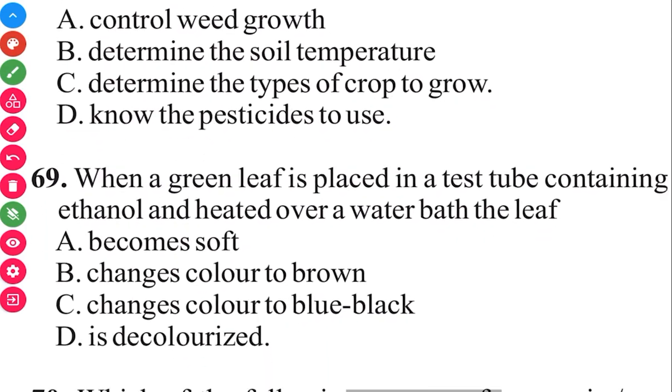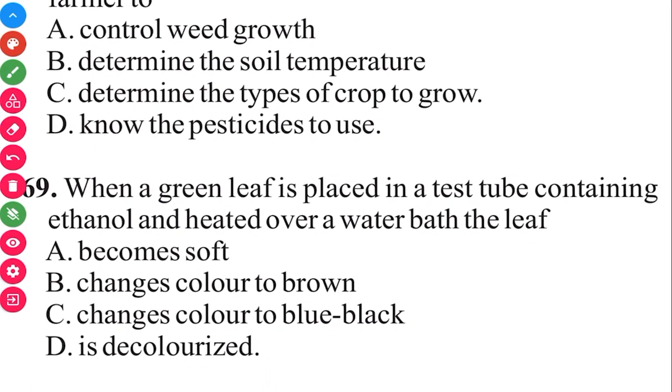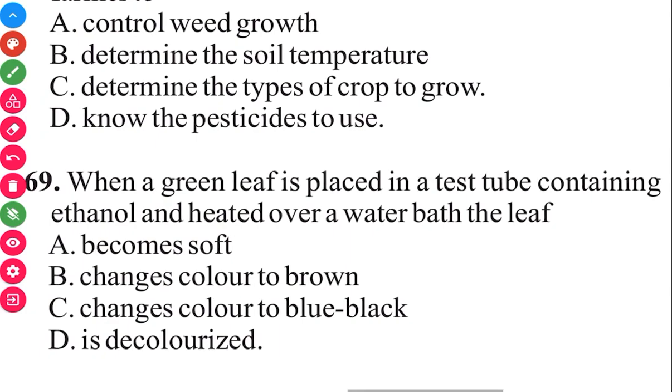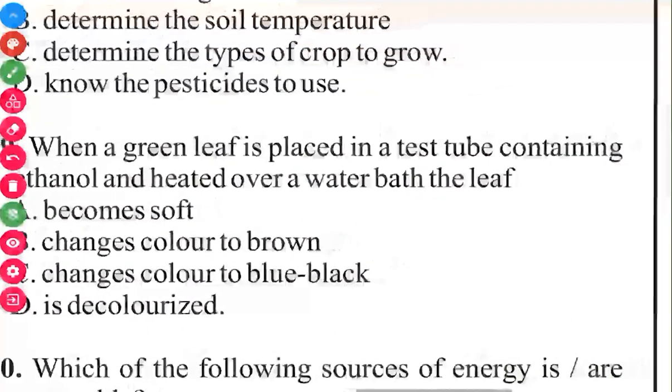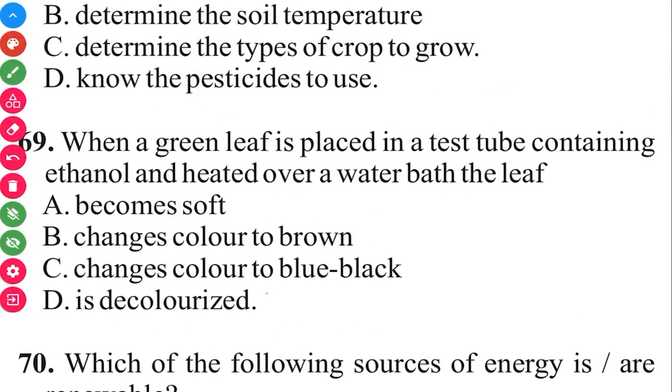Question 69. When a green leaf is placed in a test tube containing ethanol and heated over a water bath, the leaf is decolorized. 69 in 3, 2, 1 is D, is decolorized.